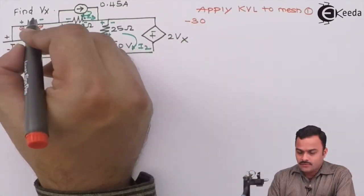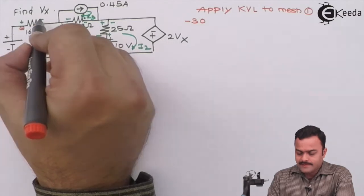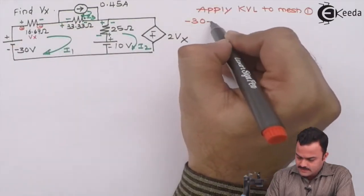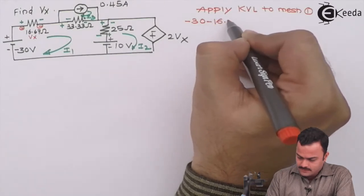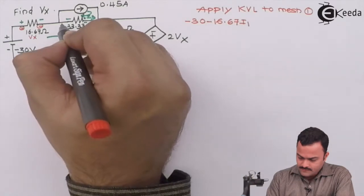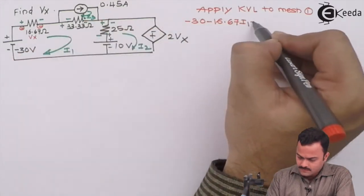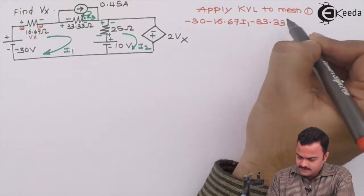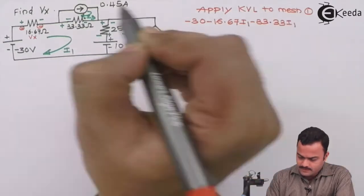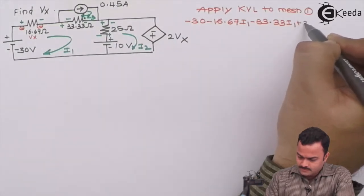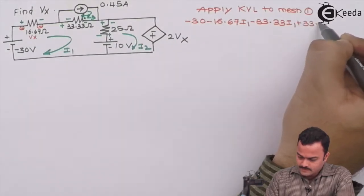Plus minus, just focus on the green ink polarity. Plus minus, so it's minus 16.67i1, minus 33.33i1, and minus plus, this is because of i3, so plus 33.33i3.